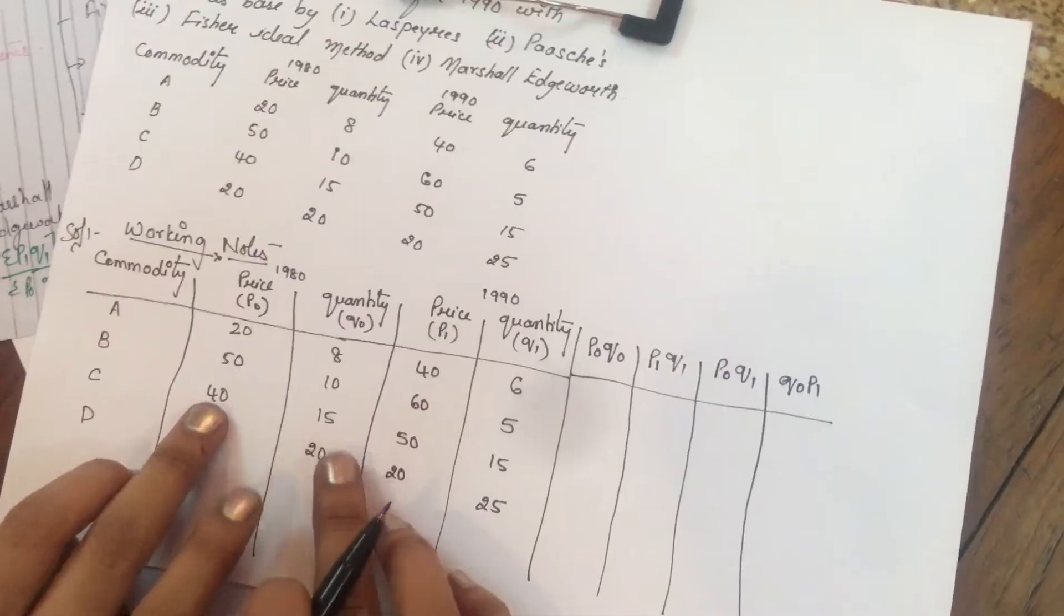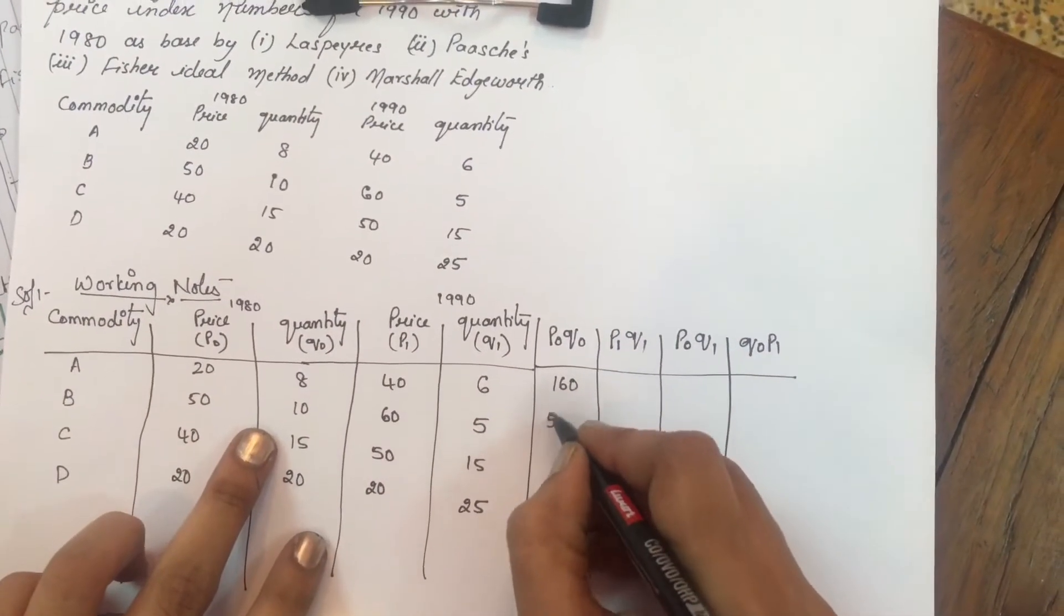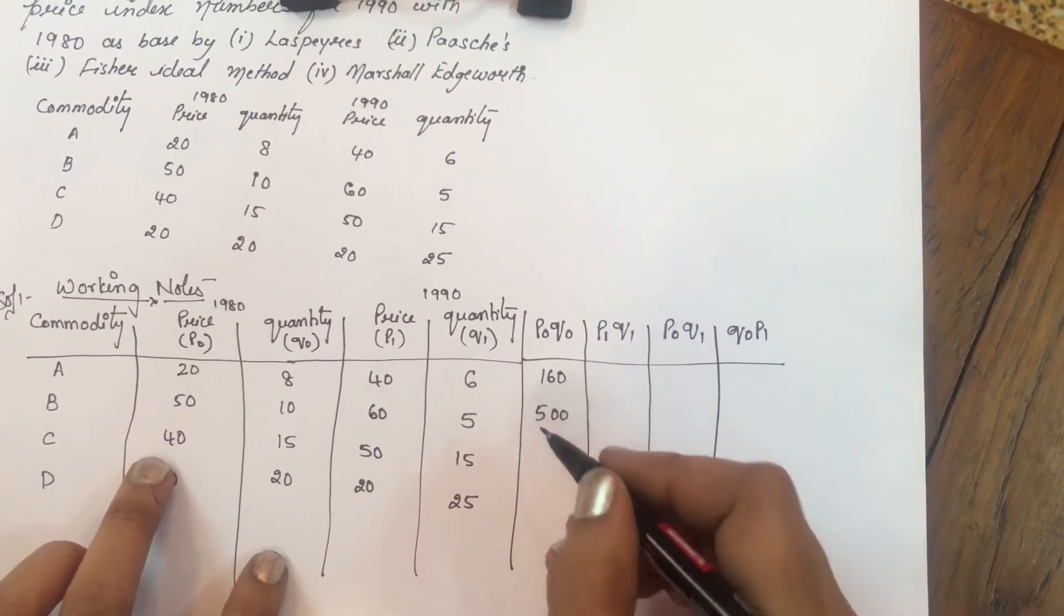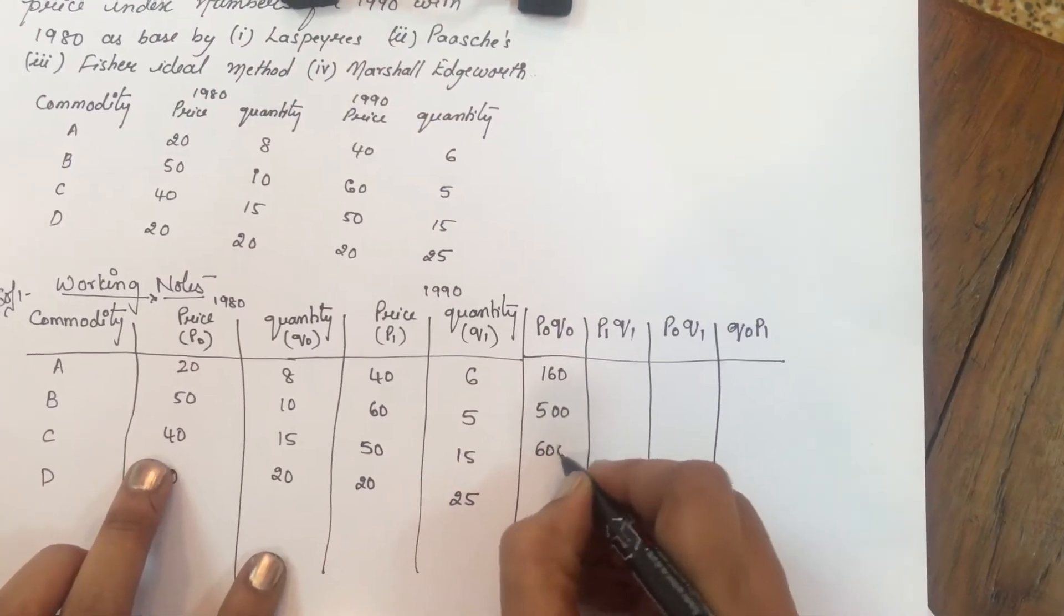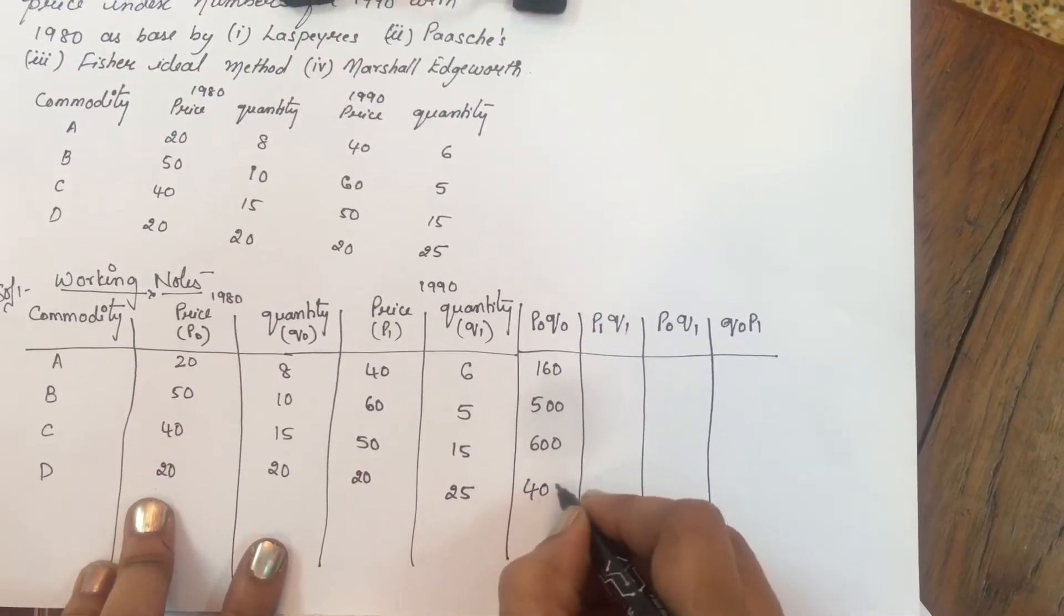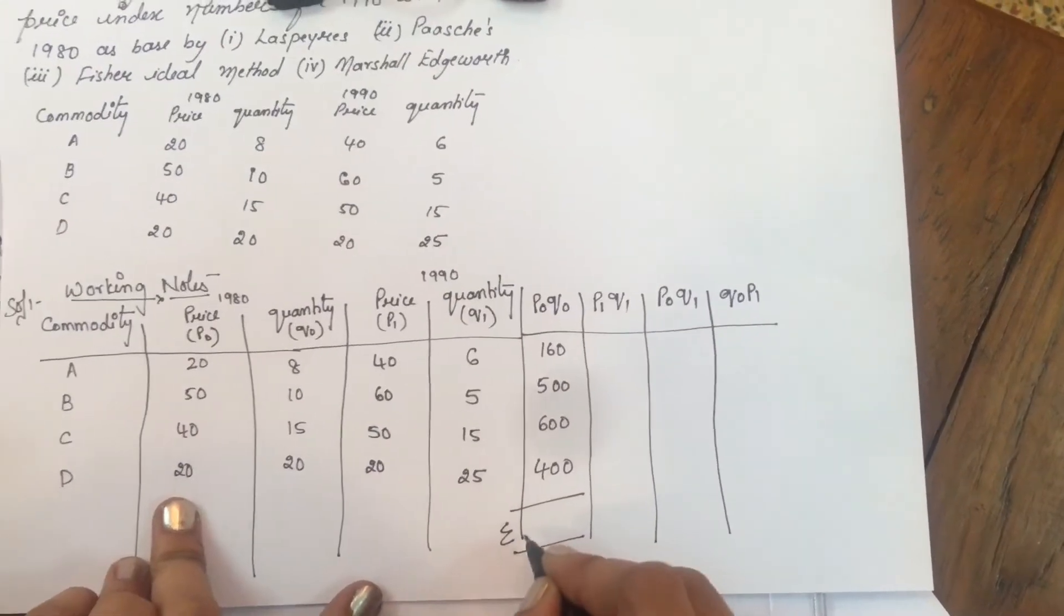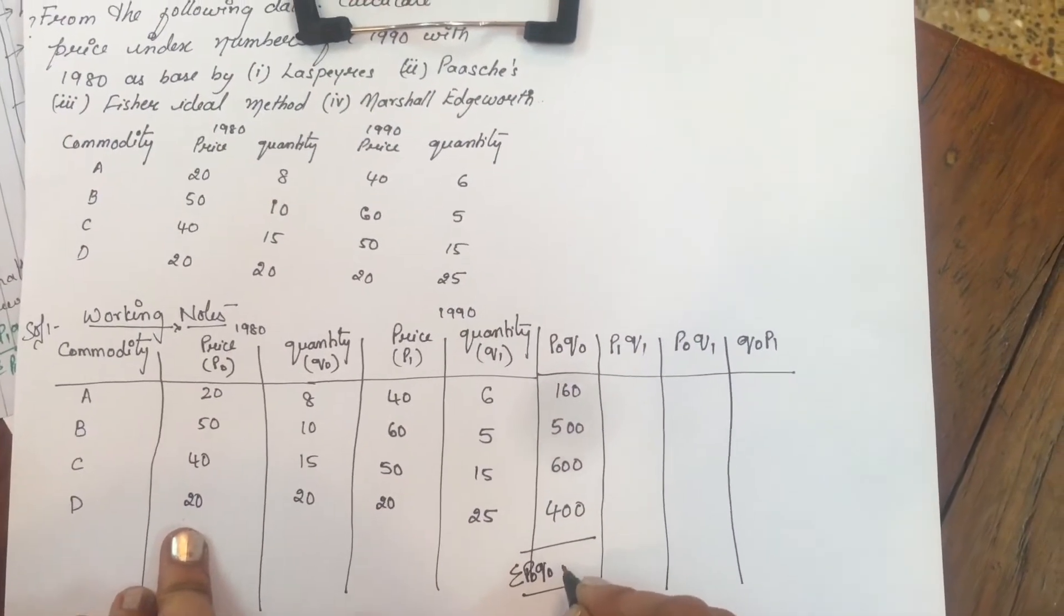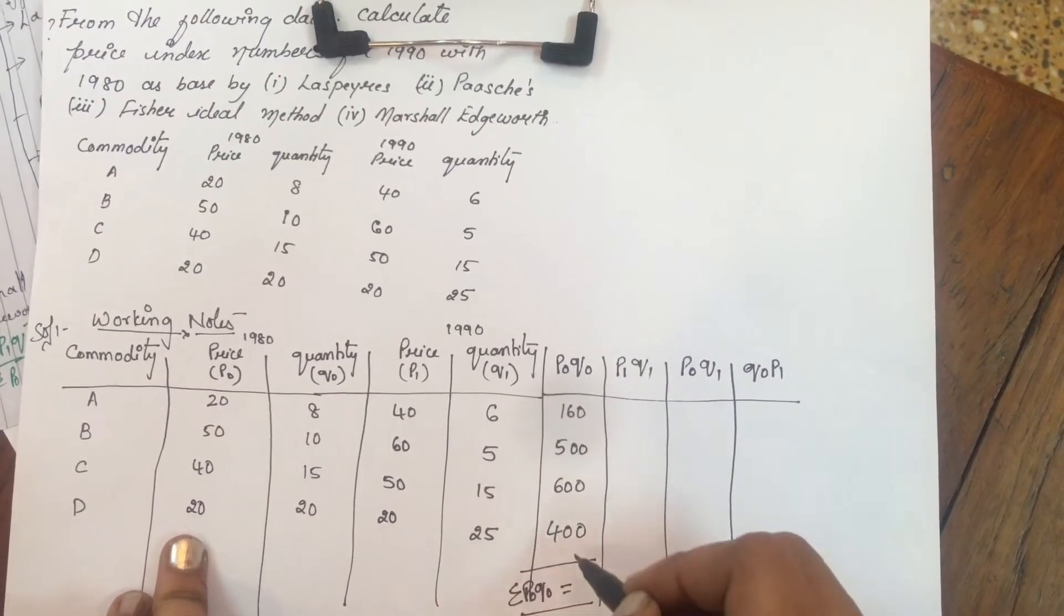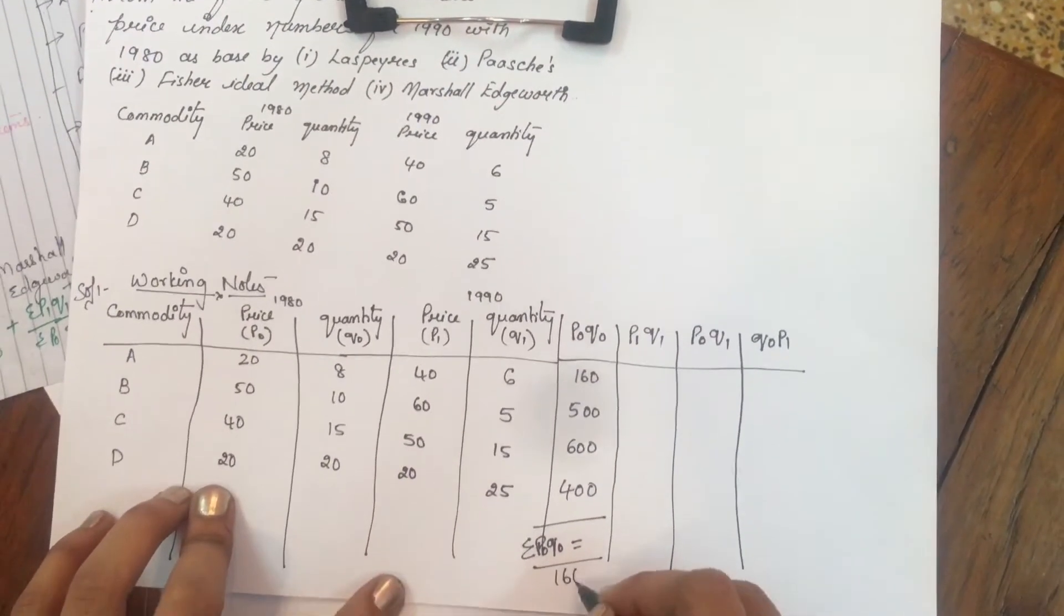Multiply P0 Q0. 8 into 20 is 160, 50 into 10 is 500, 40 into 15 is 600, 20 into 20 is 400. Add all this, Sigma P0 Q0 equal to 1660.